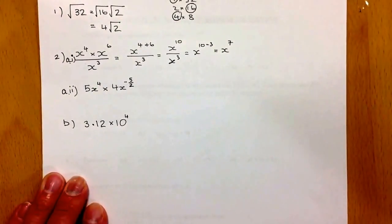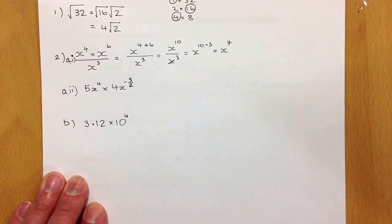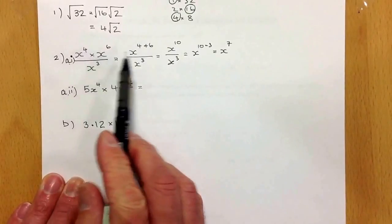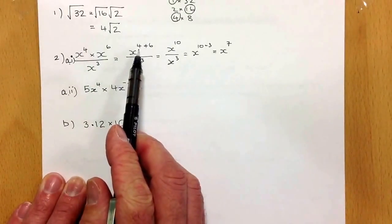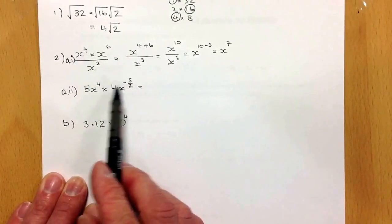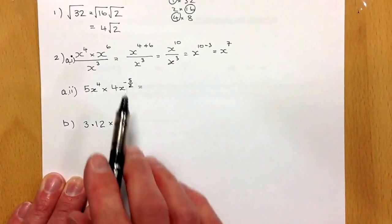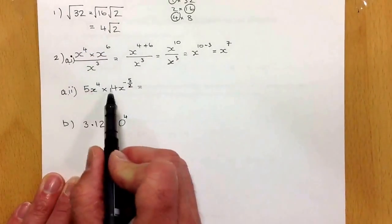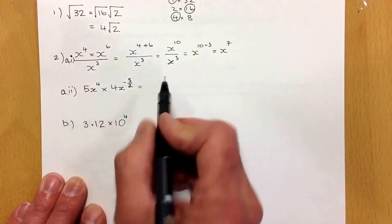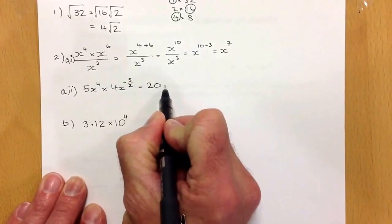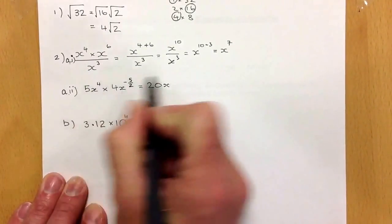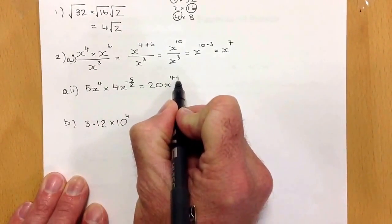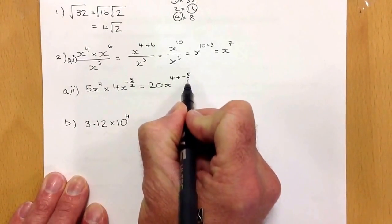Next question, another indices question. I'm going to multiply the indices using the same idea as I did at the start, adding the indices together. I'll just need to be careful because that's a negative and it's also a fraction. First thing I'm going to do is multiply the two numbers together, that should give me 20. Then I'll have x, and I'm going to have 4 minus 5 upon 2.